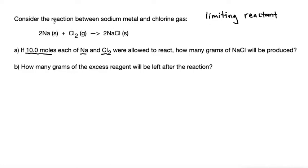That means that we have to figure out if all of the sodium that we have reacts, how much of our product do we have? And if all of our chlorine reacts, how much of our product would we have? And we have to choose the one that makes the smaller amount of product.